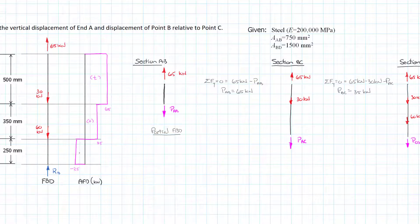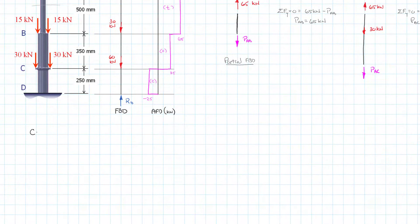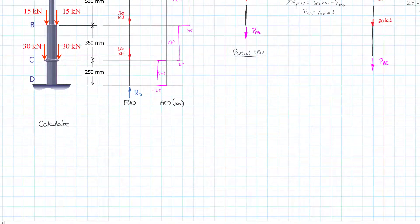I go back to the original question. The question was determine the vertical displacement of end A, so that's the overall displacement from the support at point D. We have to add up the individual components of displacement in each of the sections DC, CB, and BA. I'm going to label what we're doing: calculate displacement at A.